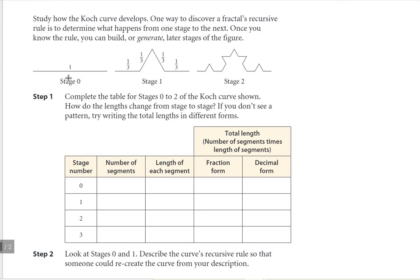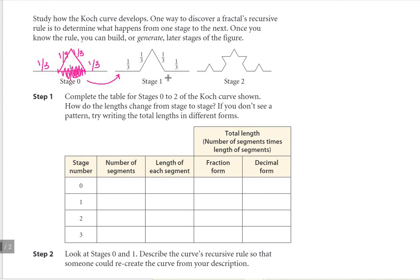We start out assuming that at stage zero the length of that segment is one. To go from stage zero to stage one, we split this first line segment into thirds. So that would mean that the first segment and the last segment would be one third, because it's one third of one. And creating an equilateral triangle, each side of that triangle would also be one third. So each segment in stage one has a length of one third.